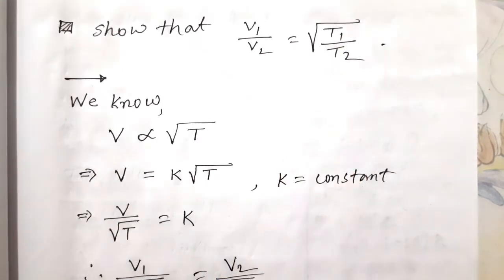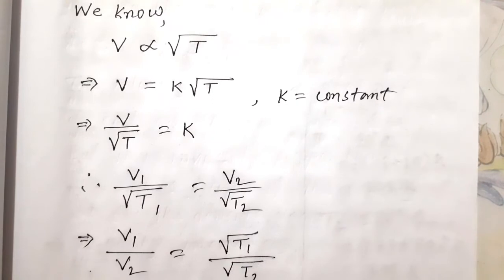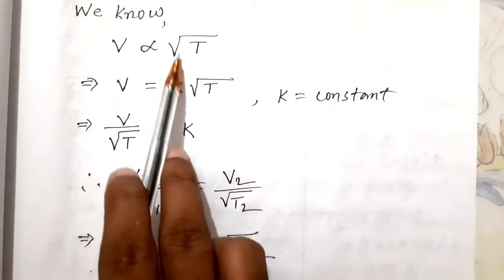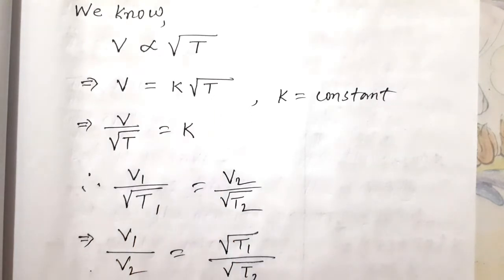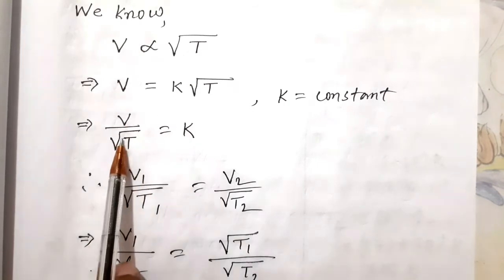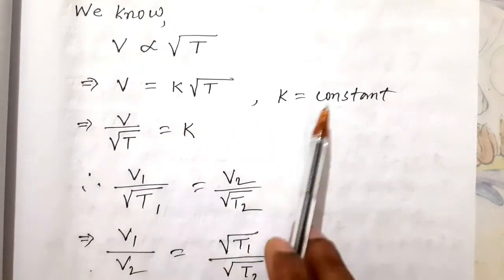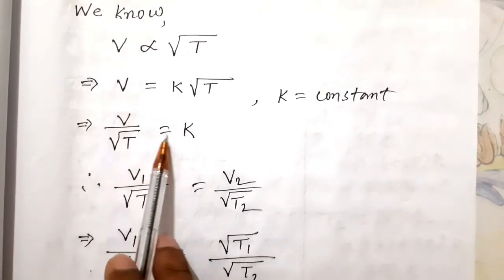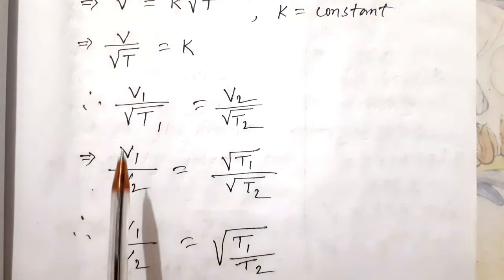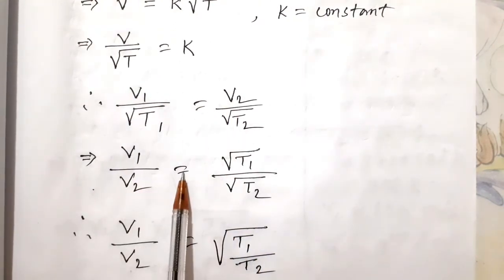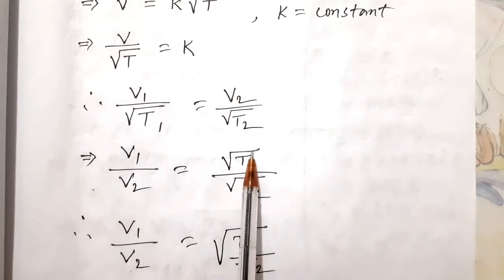V is directly proportional to the square root of temperature, so V = constant × √T. Then V/√T = k, meaning constant. So V₁/√T₁ = V₂/√T₂. Therefore, V₁/V₂ = √T₁/√T₂, which equals √(T₁/T₂).